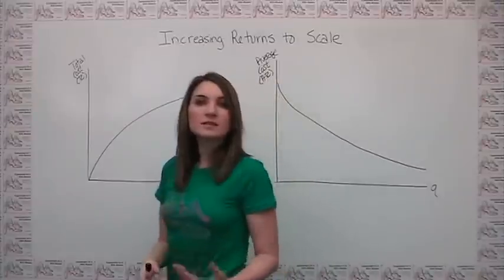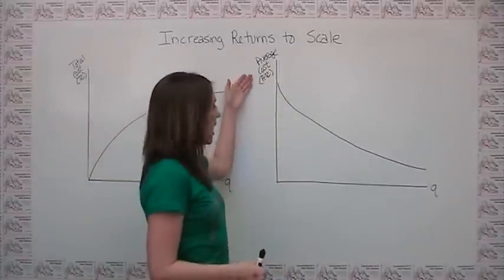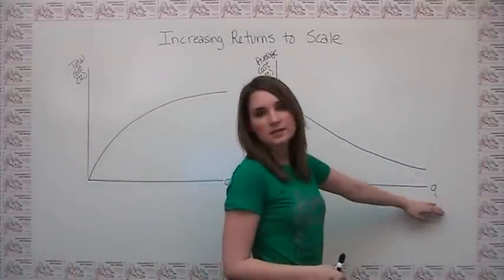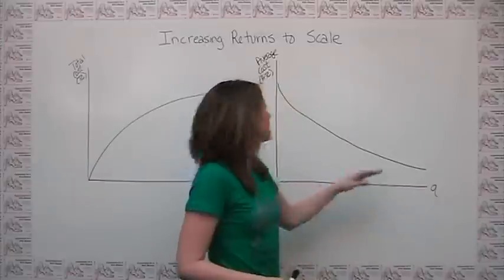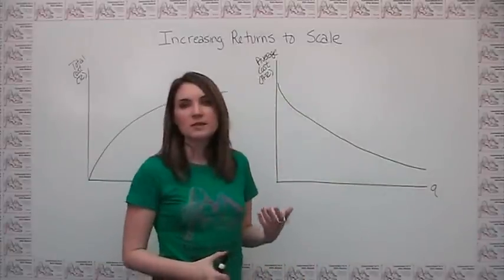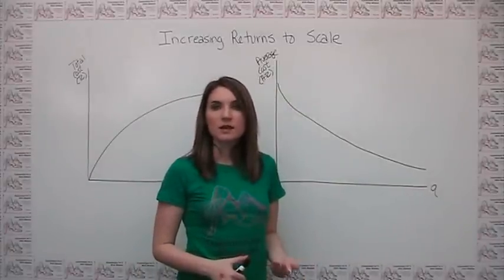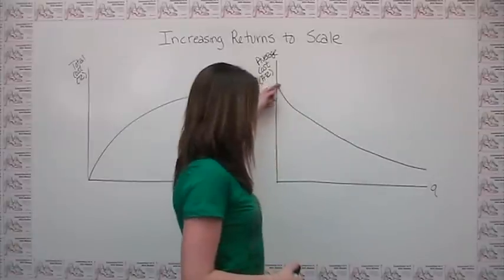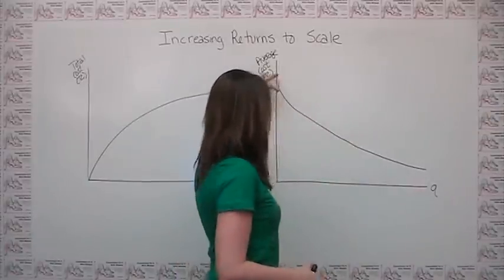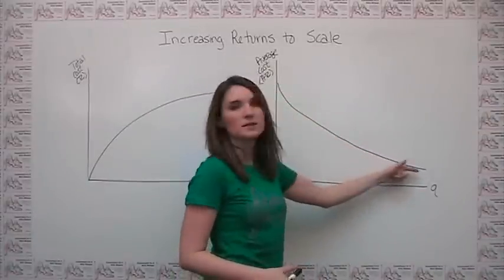Another way to see this is to look at average total cost versus quantity produced. In this case, if a firm is exhibiting increasing returns to scale, what you'll see is that as quantity increases, average total cost decreases.